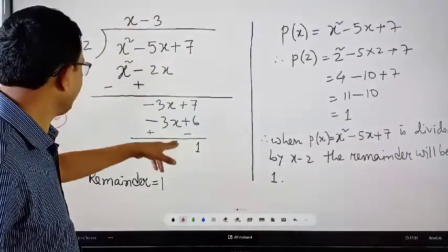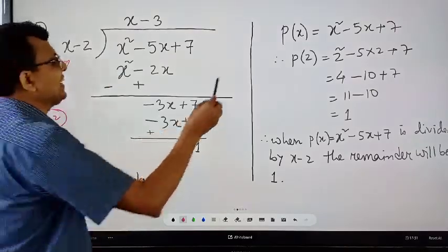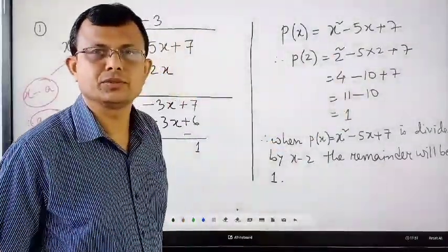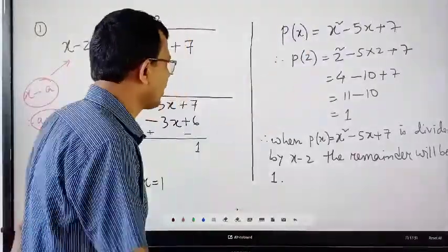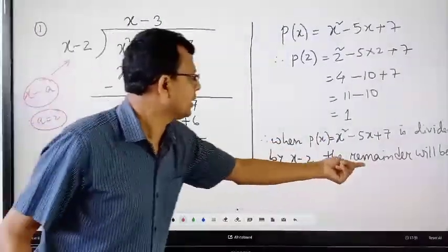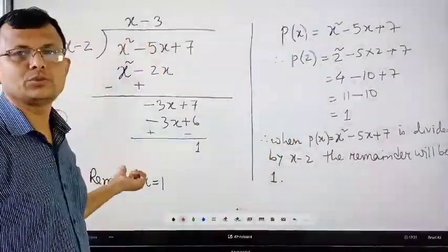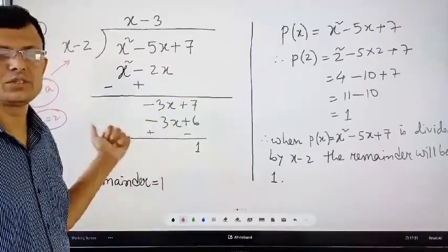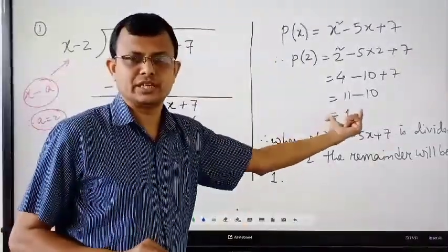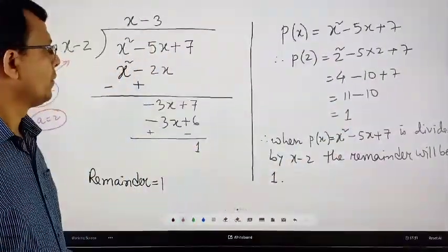The remainder we get by dividing this polynomial by x minus 2, we can get directly without actual division. That is why this is called the Remainder Theorem. With the help of this theorem, we can find only the remainder — we cannot find the quotient. Nothing is mentioned about the quotient; only the remainder can be found.